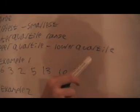So what's the range? The range is basically just the biggest minus the smallest value. And what's the interquartile range? The interquartile range is the upper quartile minus the lower quartile, and we'll see exactly what that means when we look at these examples here.